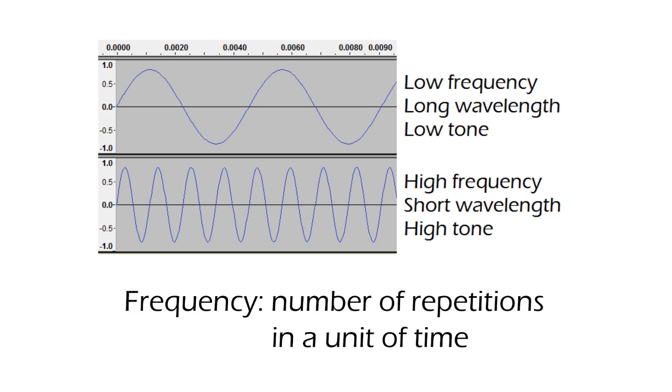For example, a low frequency wave has a relatively slow vibration and therefore a long wavelength. And a high frequency wave has a relatively fast vibration and therefore a short wavelength.